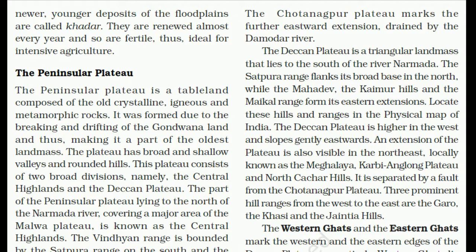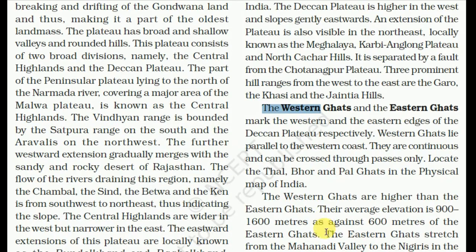Locate these hills and ranges in the physical map of India. The Deccan Plateau is higher in the west and slopes gently eastward. An extension of the plateau is also visible in the northeast, locally known as the Meghalaya, Karbi Anglong Plateau, and North Cachar hills. It is separated by a fault from the Chotanagpur Plateau. Three prominent hill ranges running west to east are the Garo, the Khasi, and the Jaintia hills.